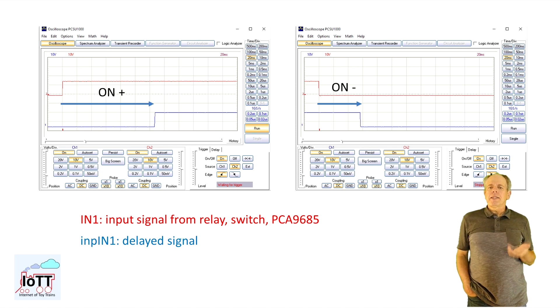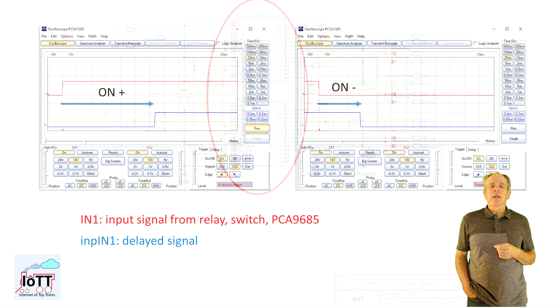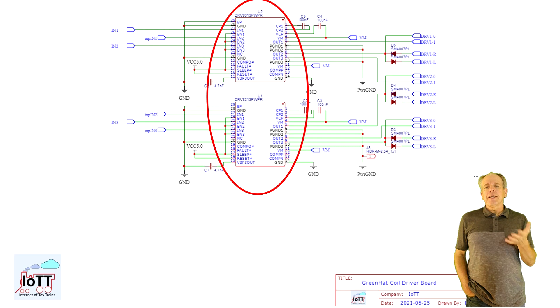At the output of the XOR gate, we then have the delayed IN signal as seen here, so we now can generate a pulse of adjustable length. These three pairs of input signals are then connected to the two driver chips.